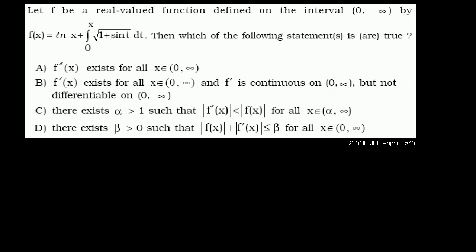Choice A says the second derivative — there are two apostrophes here — the second derivative of f exists for all x greater than 0. Then they say the first derivative exists for all x greater than 0 and the derivative is continuous on that interval, but not differentiable. So everything they're doing relates the function to the first and second derivative. Let's just write the function first: f equals the natural log of x plus the definite integral from 0 to x of the square root of 1 plus sine of t, dt.